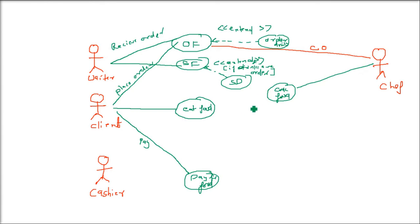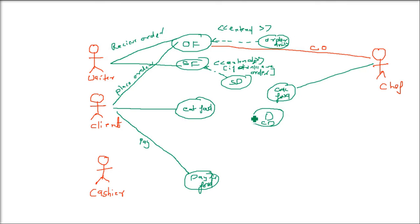There are three extend relationships related to ordering drinks. If you are eating food you may also call for drinks. All three of these extend relationships only appear on demand — if the drink was not ordered, none of these three extend use cases are triggered. They are conditional, on-demand use cases.